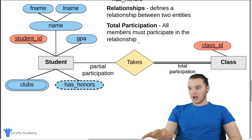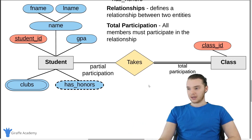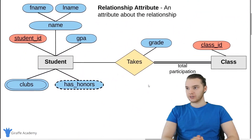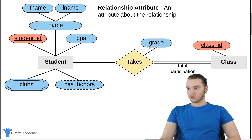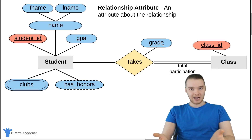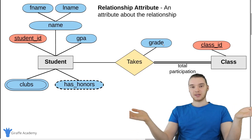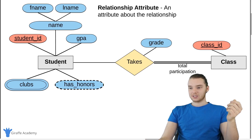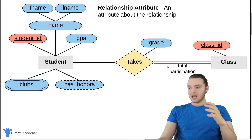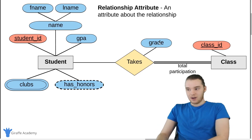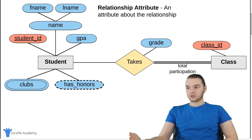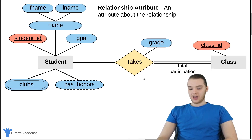We can also define attributes about a particular relationship. We have our 'takes' relationship, and I'm defining an attribute about this relationship, which is 'grade.' A student will take a class and the student will get a particular grade for that class. So I might take biology and get a B+ in biology. That grade isn't necessarily stored on the student entity or on the class entity — it's stored on the relationship. The only way I can get a grade from a class is if I take it, so that's why the relationship attribute is stored on the relationship.